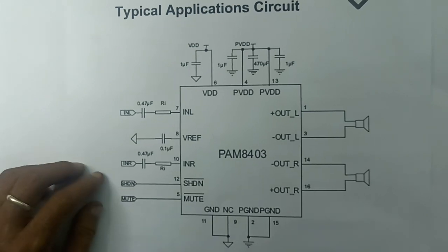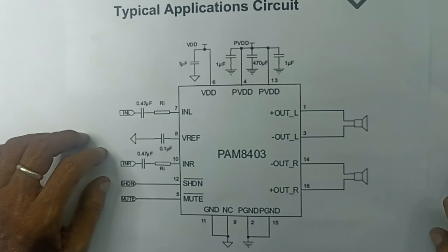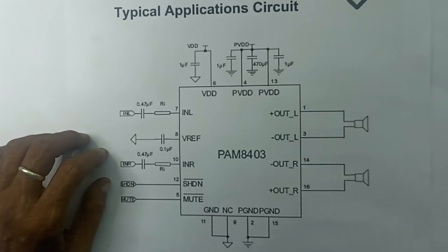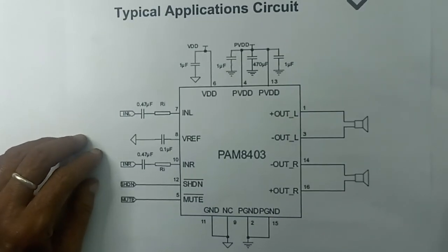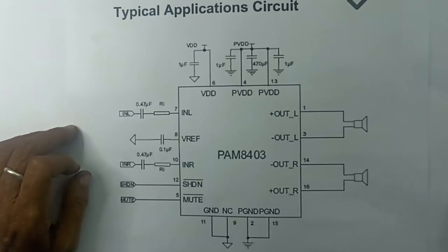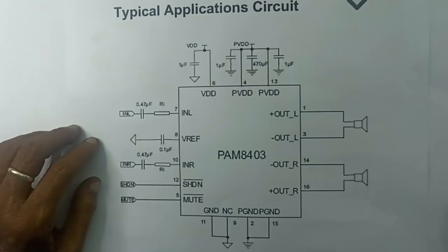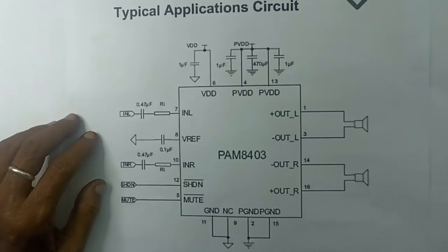Pin 1 and pin 3 are the left channel output — plus and minus. Pin 1 is the output plus and pin 3 is the output minus. This electronics training institute offers various electronic classes including cell phone training, CRT TV, LCD/LED TV, 5.1 ohm data, assembling and troubleshooting, power amplifier classes, SMD, UPS and inverter training.